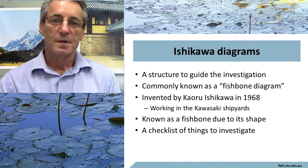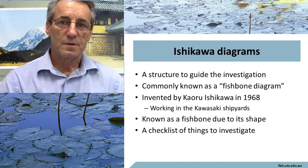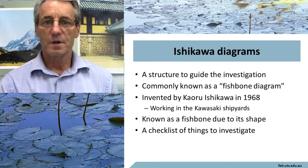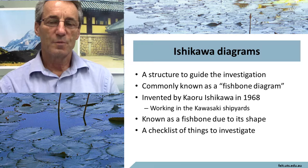I'll tell you briefly about Ishikawa diagrams. Where I'd previously said that root cause analysis has some problems because it's very free-ranging and not directed at all, to overcome this you can use some sort of a structure to guide the investigation. This is what an Ishikawa diagram is. It's also known as a fishbone diagram because when you draw them out they tend to look like a fish skeleton.